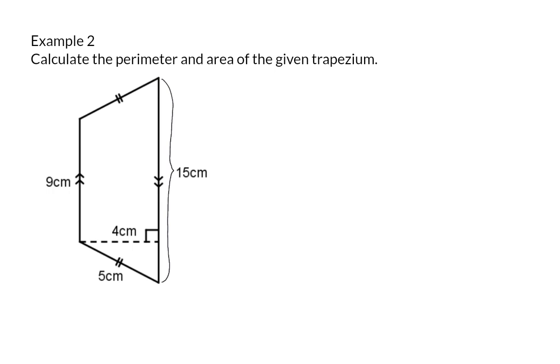In example 2, we're once again asked to determine the perimeter and area of the trapezium. For the perimeter, we have the sides 9 plus 5 plus 15 plus another 5. So the perimeter will be 34 centimeters.